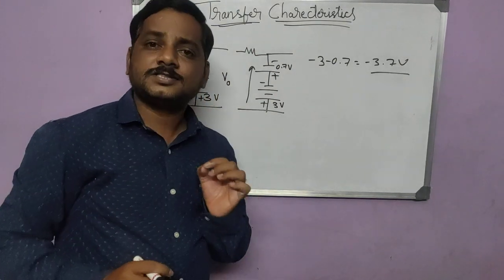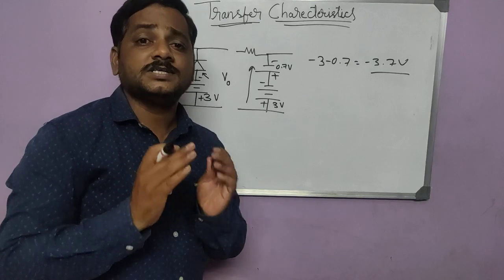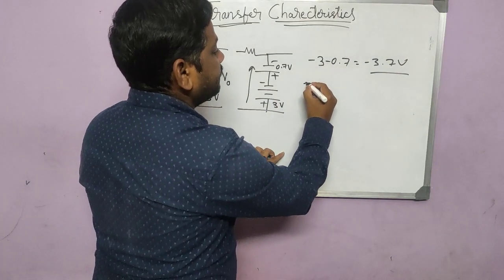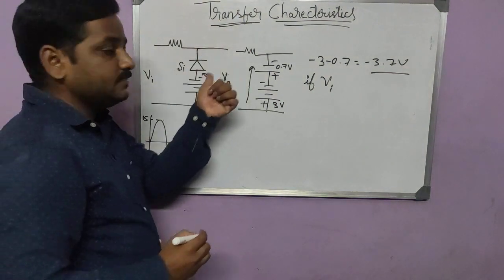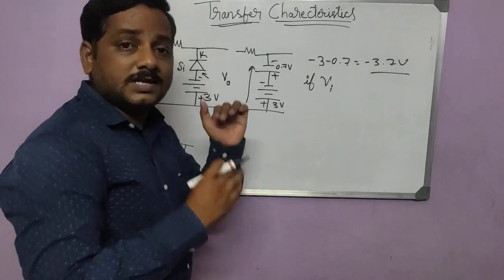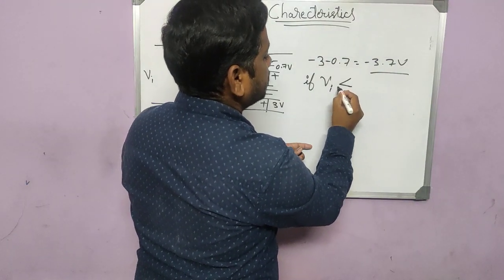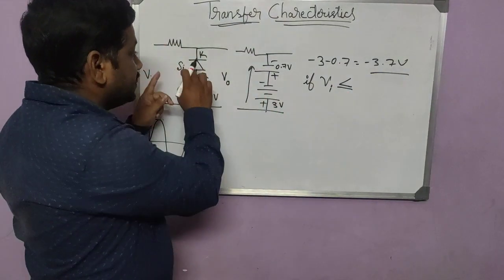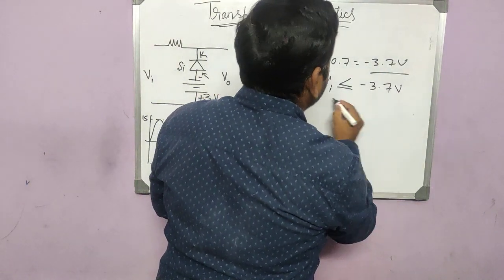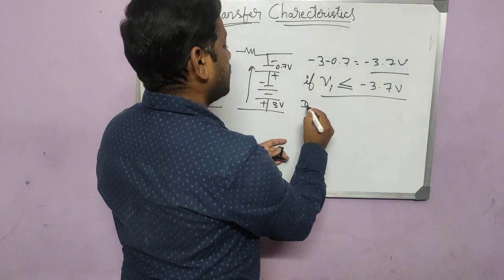We got the anode at minus 3.7 volts. Now using that, we write the conditions for the diode to turn on and off. The input is given to the cathode terminal. If V_in is less than or equal to the anode voltage, the diode will conduct. So if V_in is less than or equal to minus 3.7 volts, the diode is ON.